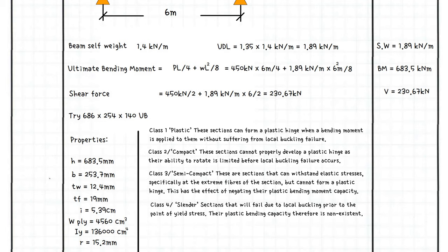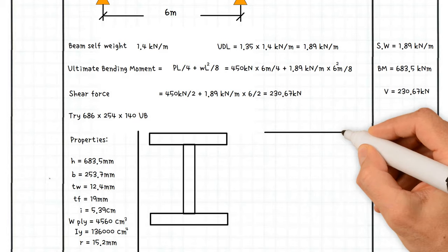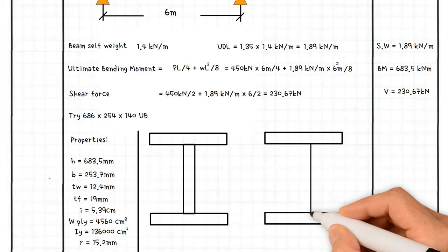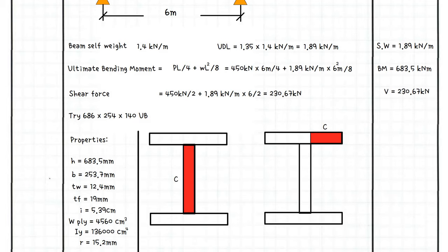Class 4, slender: sections that will fail due to local buckling prior to the point of yield stress. Their plastic bending capacity therefore is non-existent. When determining the classification of a section, typically two parts of a rolled steel beam section are considered. For a simply supported beam, these are the edge of the top flange and the web, both of which are subjected to compression stress due to bending.